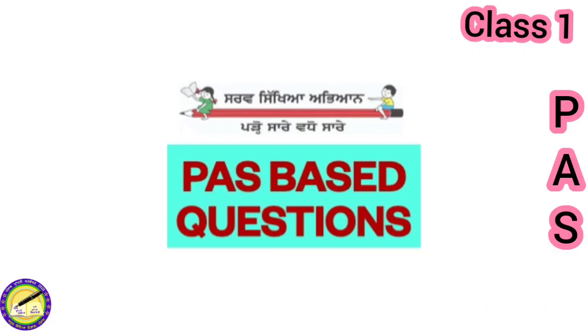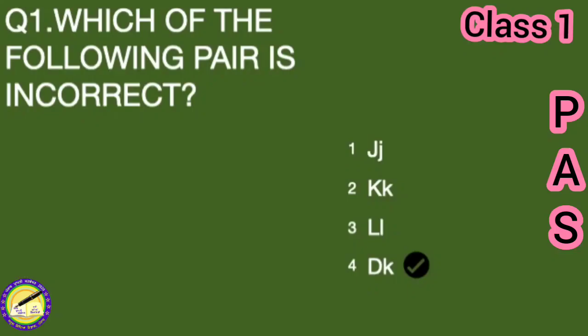Now let's do some past based questions. First question is: which of the following pair is incorrect? We have four options. First is capital J, small j. Second is capital K, small k.